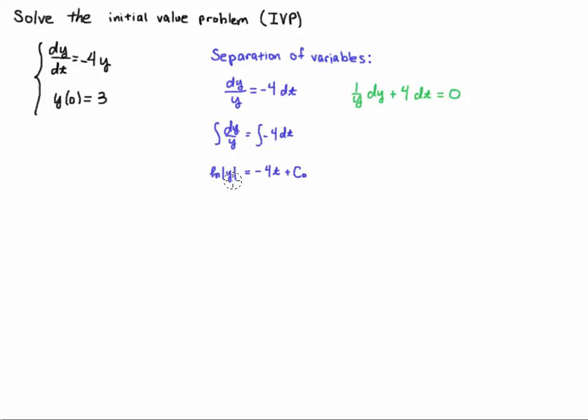Because y could potentially take on negative values so we'll keep those absolute value bars. If we integrate minus 4 dt well that's minus 4t plus some arbitrary constant I'm going to call it c naught. Now we're going to play with this arbitrary constant and it's going to take on all kinds of values but just keep in mind that this is just always an arbitrary constant.